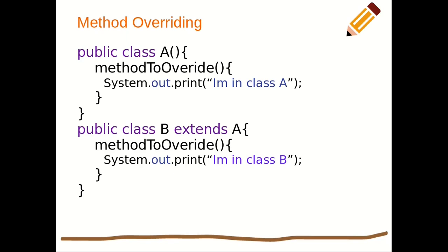Looking at a code snippet: we have class A, which has a method called 'methodToOverride'. We have class B that also has 'methodToOverride' and it extends class A, so it has inherited that method. However, class B has its own version of 'methodToOverride' with different content — class A outputs 'I'm in class A' while class B outputs 'I'm in class B'. That is method overriding.